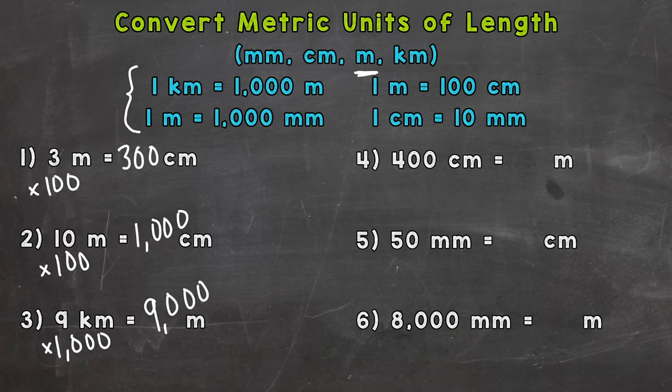Number four: four hundred centimeters equals how many meters? Each meter contains a hundred centimeters, so we need to take that 400 and split it into groups of 100 — each group of 100 equals one meter. So centimeters to meters: divide by a hundred. Four hundred divided by one hundred gives us four meters.